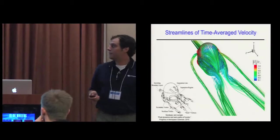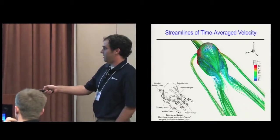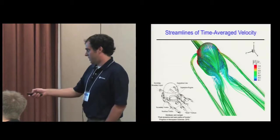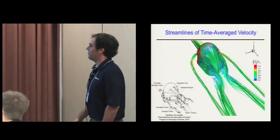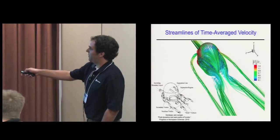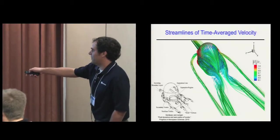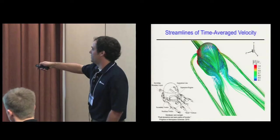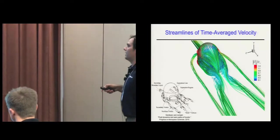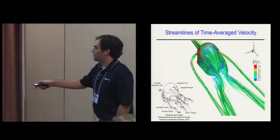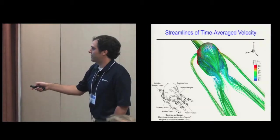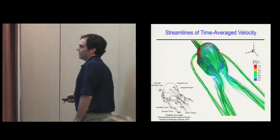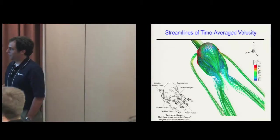This is the streamlines of the time average velocity, colored by velocity magnitude. Here is a diagram from some experimental work. A lot of the flow that comes in near the base gets wrapped into this necklace vortex. The stuff that goes over the top gets pulled into this recirculation zone where the velocity is low, then eventually spirals out into these horn vortices.